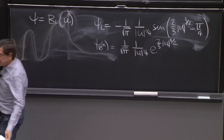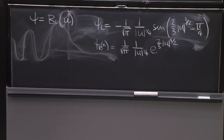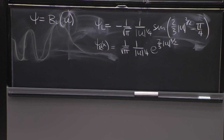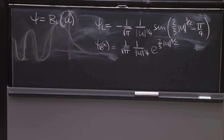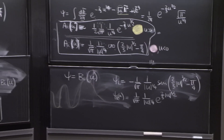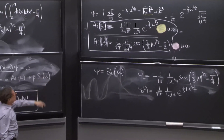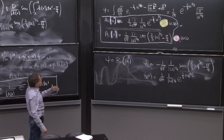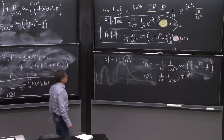This is the asymptotic behavior of Bi. What's noteworthy about it? First, that it oscillates for u negative — that's to the left. It oscillates with a sine instead of a cosine, with the same phase shift.